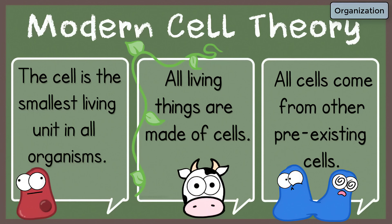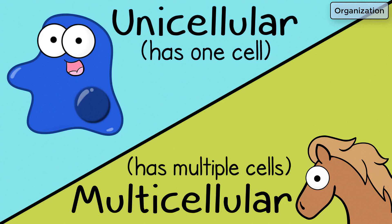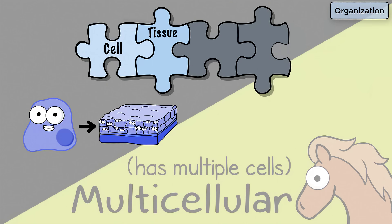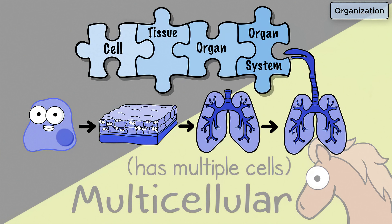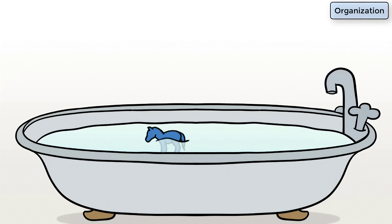Organization. We can look at cell theory here and see that, according to this theory, living organisms are made of cells. Some organisms are unicellular — made up of just one cell. But more complex organisms, like this pony here, are multicellular and can be made up of many cells, which can be arranged into tissues. The tissues can make up organs, and the organs can be part of an organ system. These are biological levels of organization. As for our bathtub-grown pony — no cells.